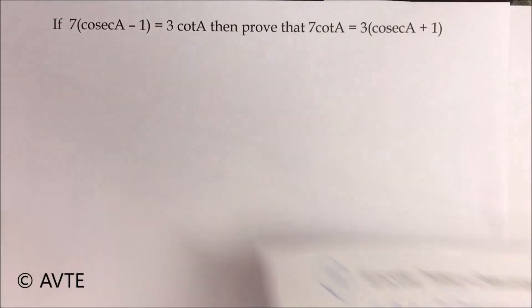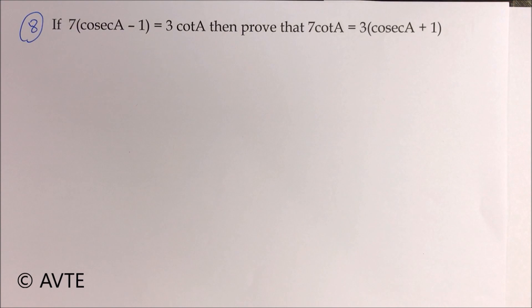If 7 cosec A minus 1 in bracket is equal to 3 cot A, then prove that 7 cot A is equal to 3 cosec A plus 1. Do this question as a homework. Till then, goodbye.